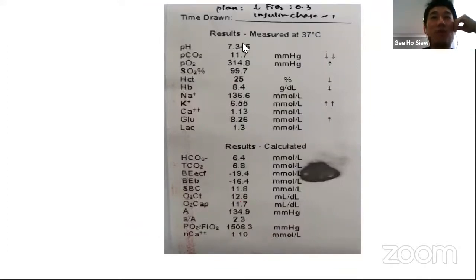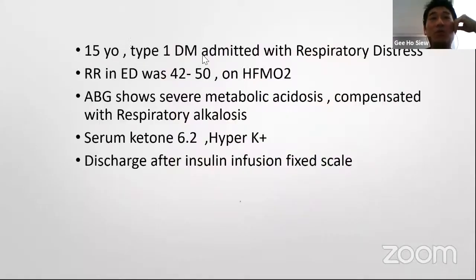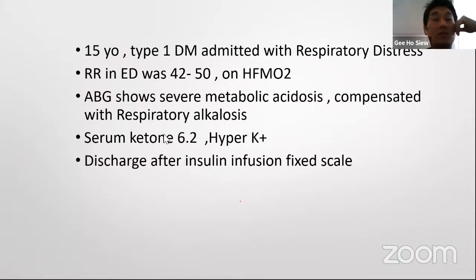Case 2: pH 7.3, PaCO2 11, bicarb 6.4, potassium 6.5, lactate 1.3. This ABG shows metabolic acidosis with compensation by hyperventilation — dropping PaCO2 to bring pH toward 7.35. This is a 15-year-old girl with Type 1 diabetes presenting with respiratory distress in the ED, RR 28–50, on high-flow mask. ABG shows metabolic acidosis compensated by respiratory alkalosis. Serum ketones 6.2 with hyperkalemia — diagnosed as severe DKA. She was treated with insulin and subsequently discharged.